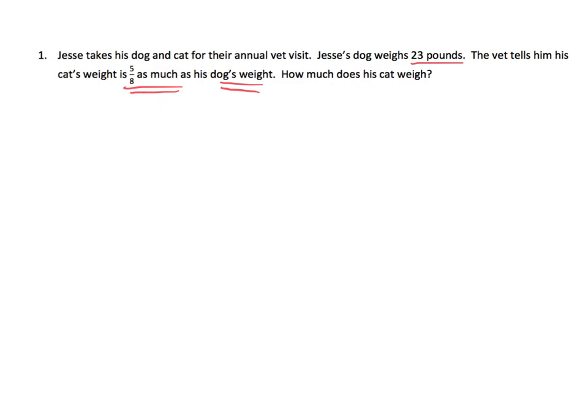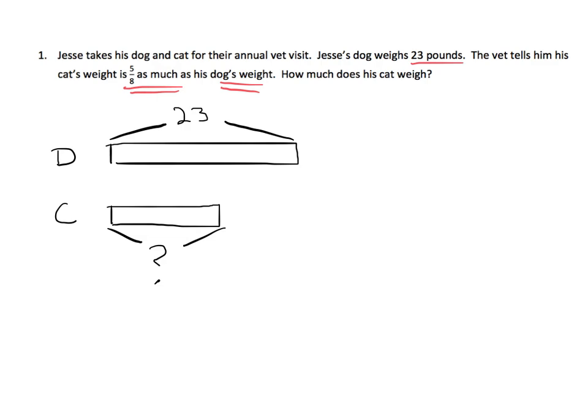So the idea would be, we know that if we wanted to draw the picture, dog and cat, we would know that the dog's tape diagram is going to be longer than the cat's tape diagram, and we know that the dog weighs 23 pounds, and that the cat right here is a big old question mark, but we know that it is 5 eighths of 23. So what are we going to do?